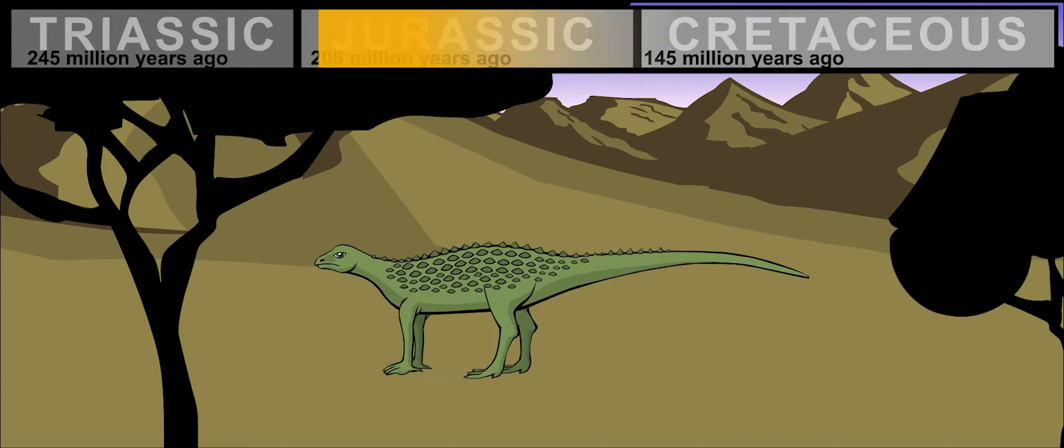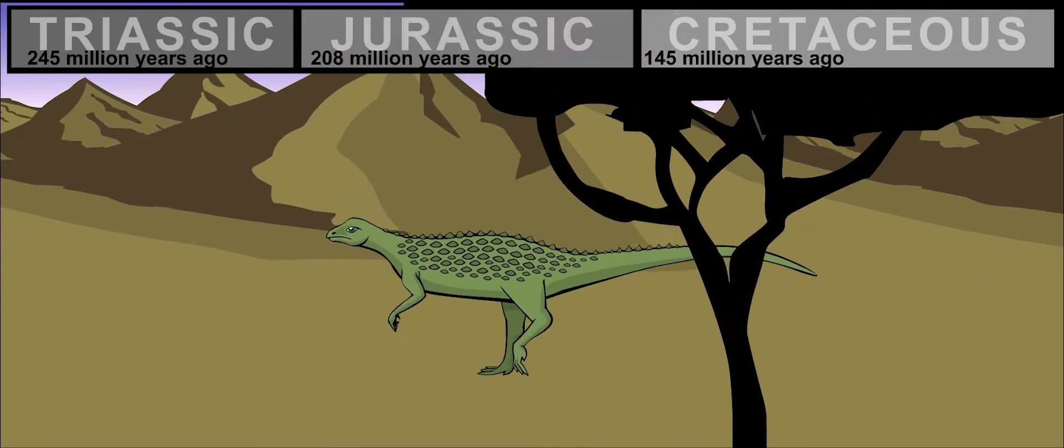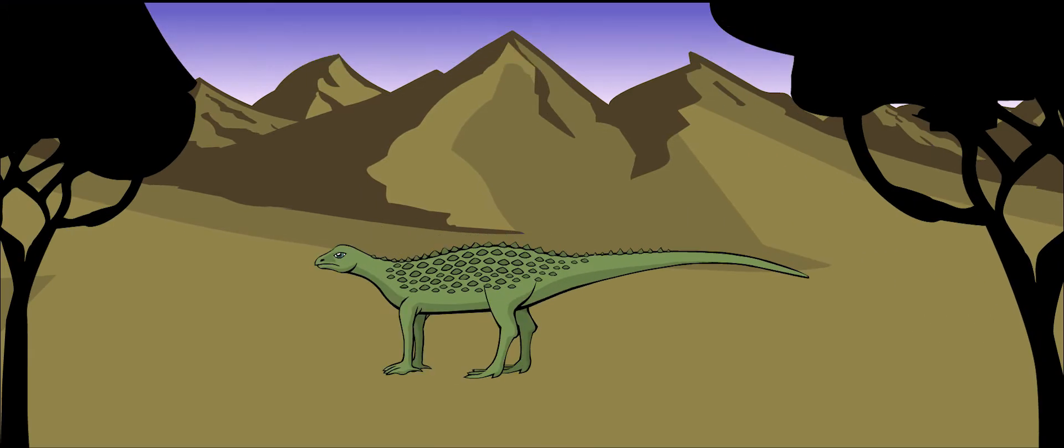Scutalosaurus lived about 200 million years ago. It was one of the most primitive armored dinosaurs of its time.